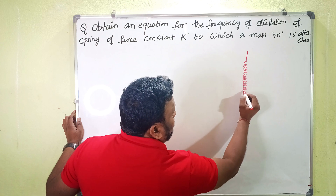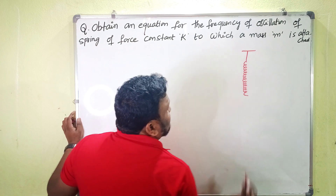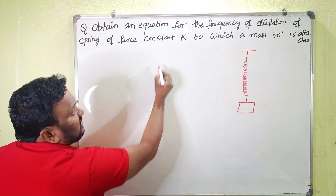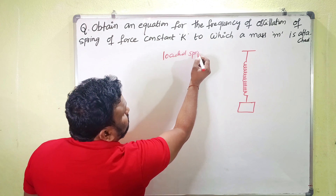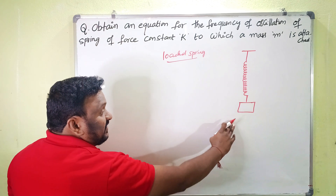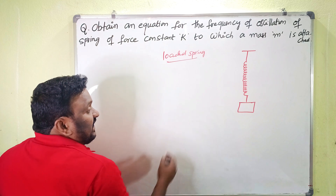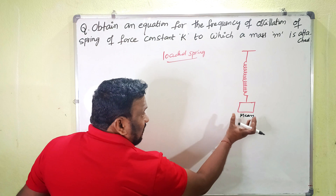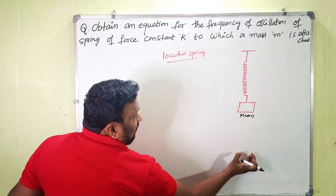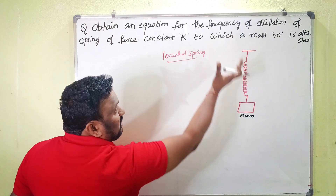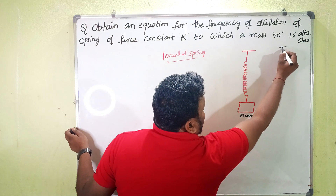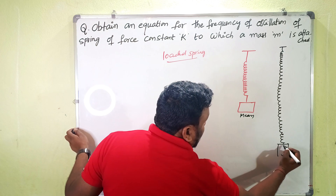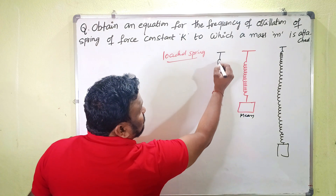This is a loaded spring — one spring suspended from a rigid support with some mass attached to it. The oscillations made by the loaded spring are simple harmonic oscillations. When it is at the rest position, that is the mean position. When you apply force by pulling it downward and releasing it, it will execute simple harmonic oscillations — going downward and then upward like that.